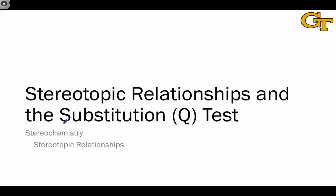As we did for stereoisomeric relationships, we want to develop a rigorous test to determine the stereotopic relationship between a pair of groups within a given molecule. One of the tests to do this is called the substitution test, and it's akin to the fail-safe method for determining chirality and the flowchart approach to determining stereoisomeric relationships. It's foolproof. There is a somewhat quicker method in some cases that we'll discuss in the next video, but the substitution test is a foolproof way to determine stereotopic relationships.